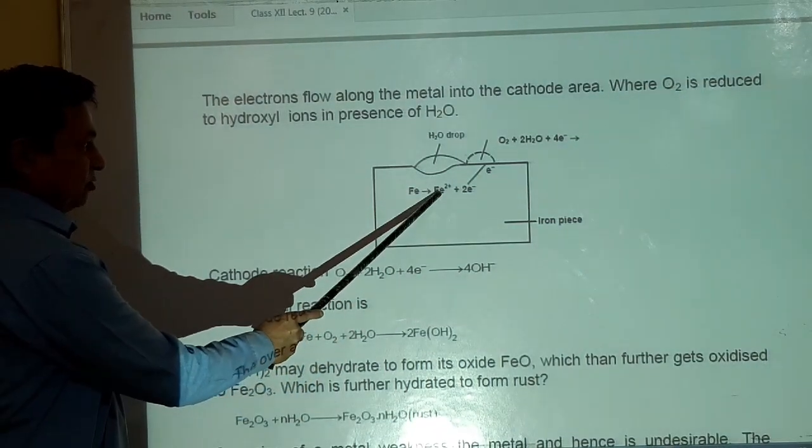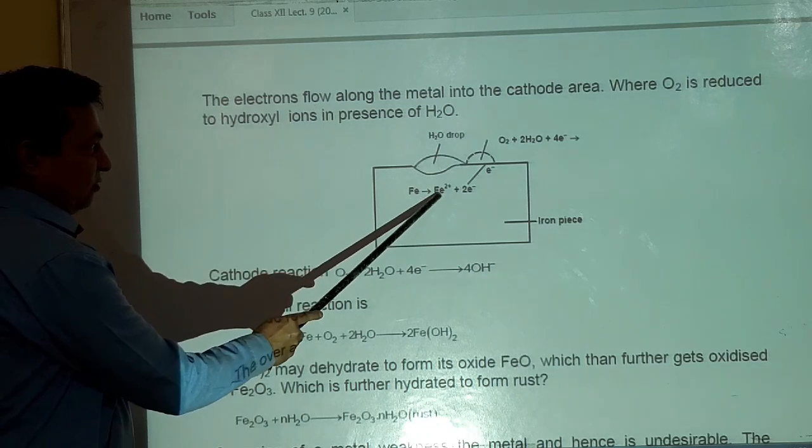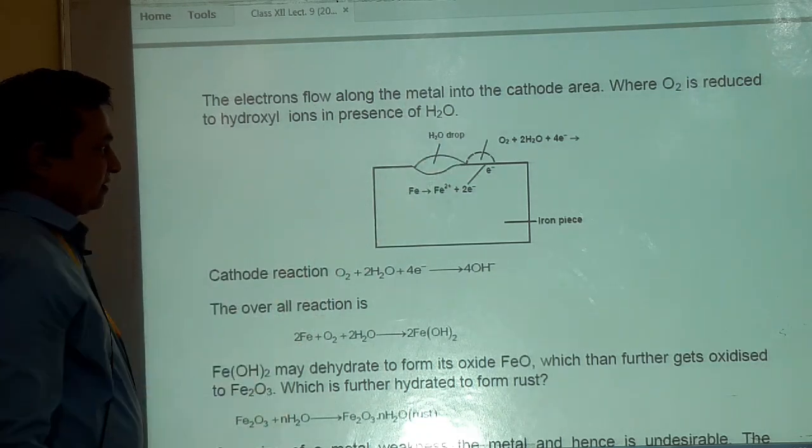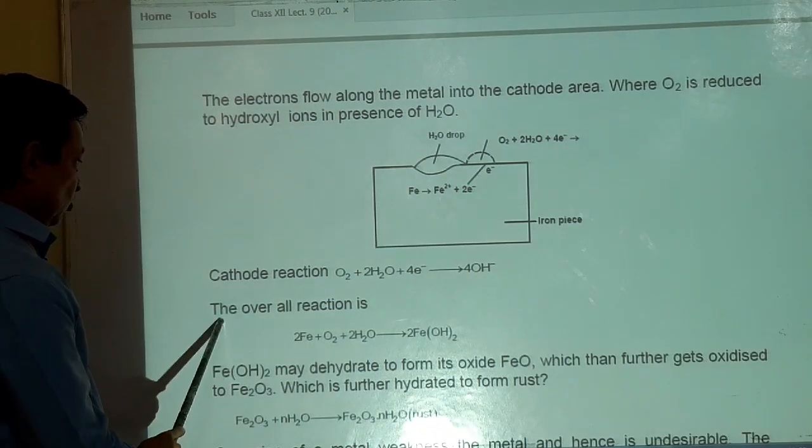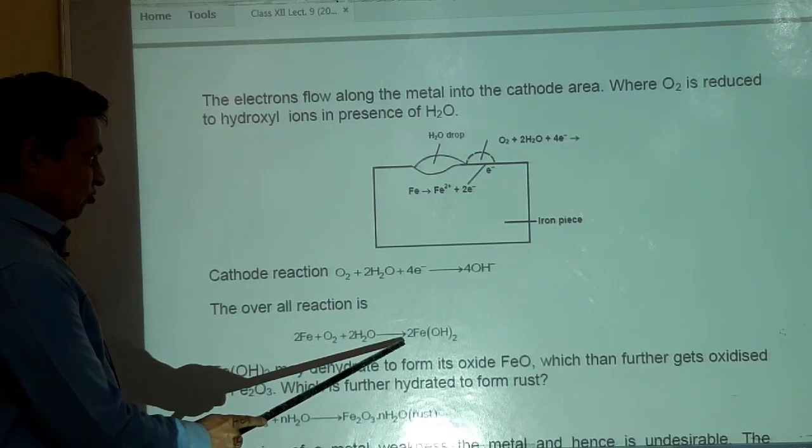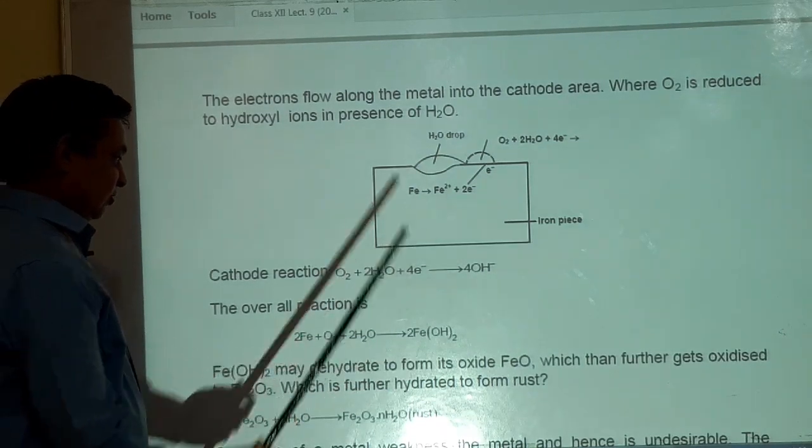यह Fe plus 2 ion oxidize होगे Fe, Fe plus 2 में. और फिर यह iron Fe plus 2 ion किस पर आगे? Object की surface पे. The overall reaction is, दोनों को add करेंगे. 2Fe plus O2 plus 2H2O gives 2Fe(OH)2.